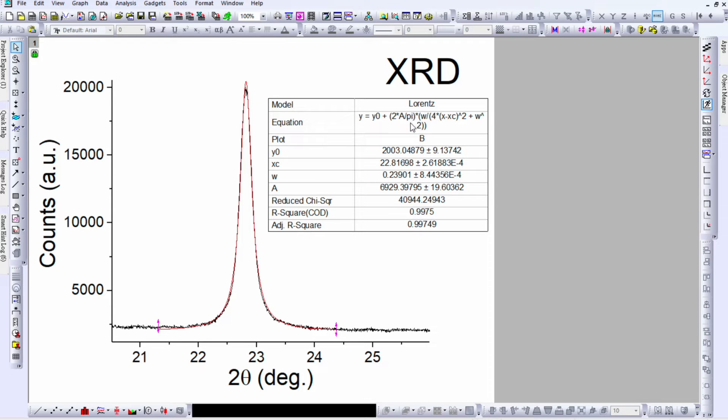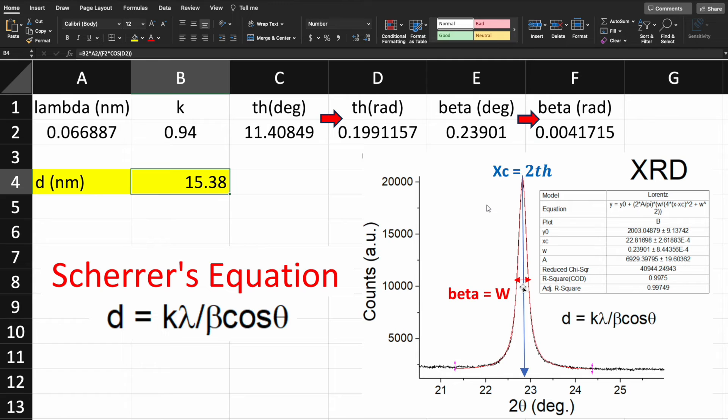By using Lorentzian function through fitting, I got the peak center and full width half maxima. If you want to learn how to perform fitting you can watch my previous video. After fitting we got the full width half maxima which is beta and the peak center which is 2 theta.